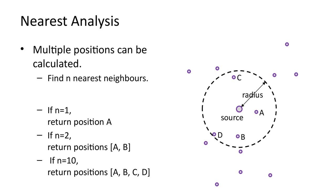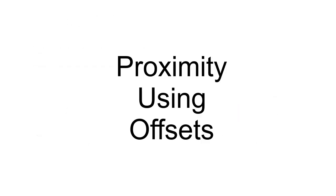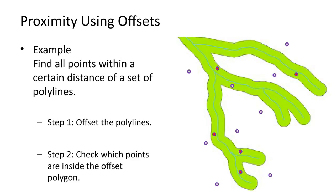Next, we will look at using offsets to calculate proximity. If the proximity between many positions needs to be calculated, another approach is to use offsets. Geometric entities can be offset to create polygons. Points can then be checked to see if they are inside or outside the offset polygons. For example, to find positions within a certain distance from a set of polylines, you can first offset the polylines to generate a single union polygon, then check to see if the positions are in the polygon.